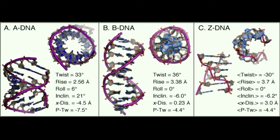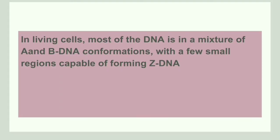This diagram shows three forms of DNA: A-DNA, B-DNA, and Z-DNA. A-DNA and B-DNA are right-handed, whereas Z-DNA is left-handed. B-DNA is the classical, commonly known DNA. A-DNA is much shorter than B-DNA and forms under dehydrating conditions. Z-DNA is formed under high salt concentration. In a living cell, most DNA is a mixture of A and B forms, with a few regions containing Z-DNA.